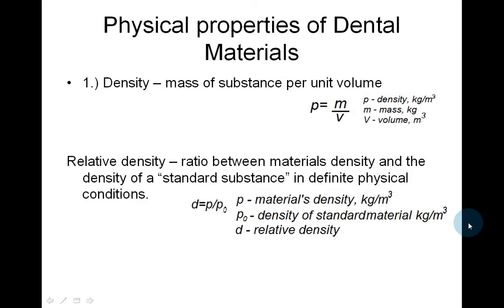The physical properties of dental materials — for example, density. Density is the mass of a substance per unit volume. Relative density is the ratio between a material's density and the density of a standard substance.